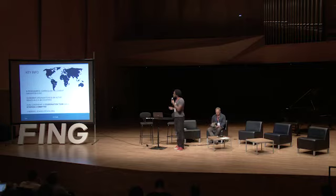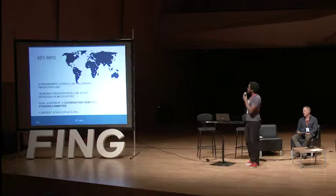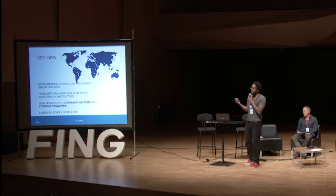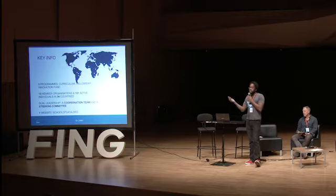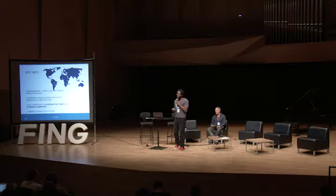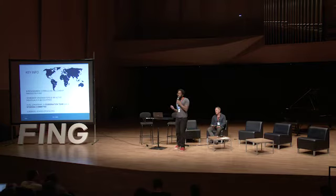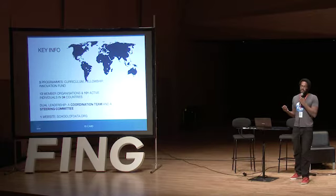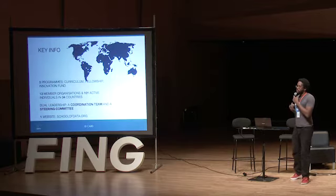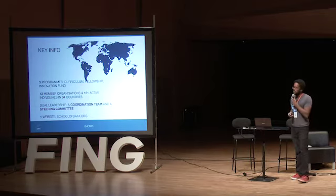Some key info about School of Data today. From this initial idea of making a MOOC, today we are a network present in 34 countries. We have 13 member organizations, 100 active individuals — including our fellows, members of our member organizations, and individuals who contribute as individual persons. Three programs that we run: the curriculum, which produces the content on our website schoolofdata.org; the fellowship — a fellow is sort of a collaborator, someone who will do work in line with our goals, and we learn as much from them as they learn from us; and lastly, an innovation fund to help sustain innovation within the network.